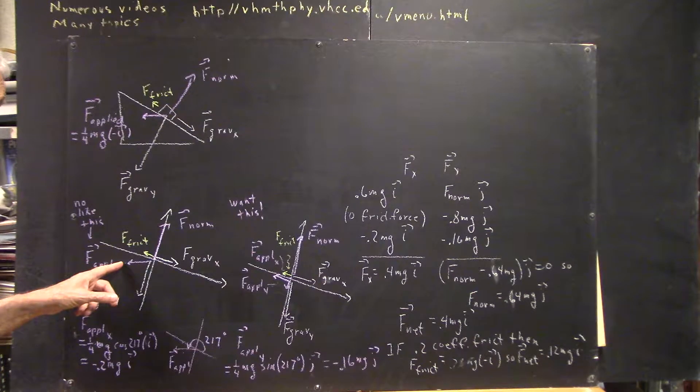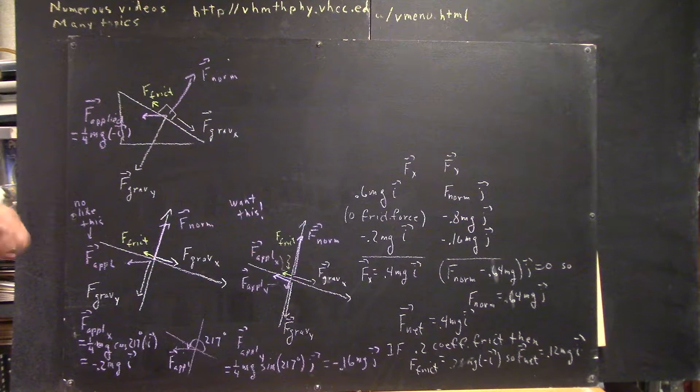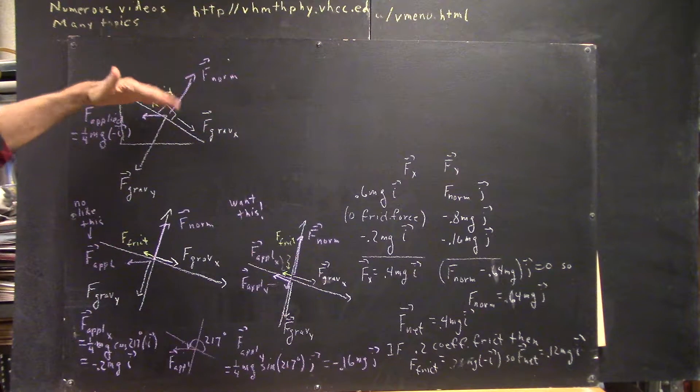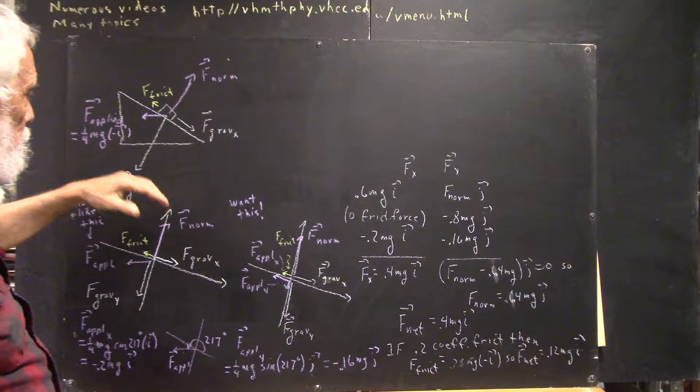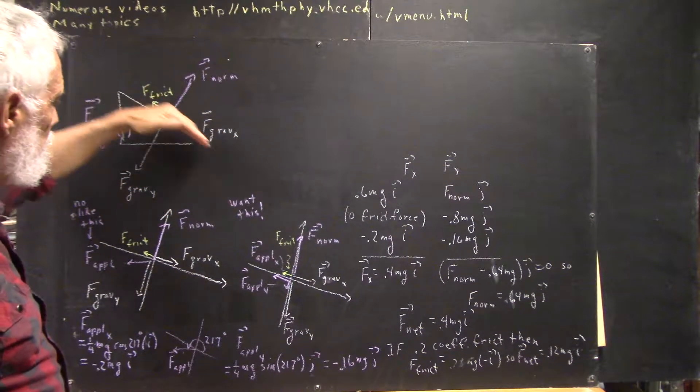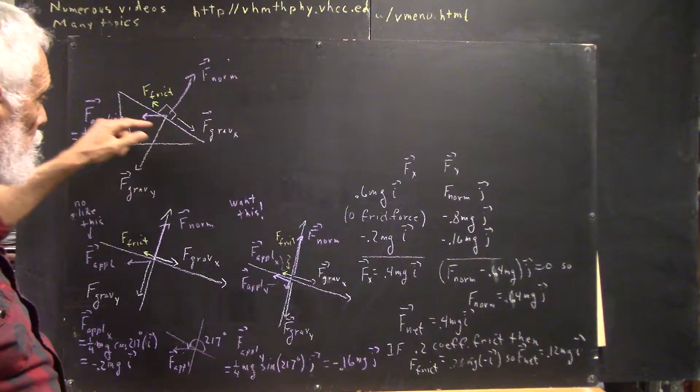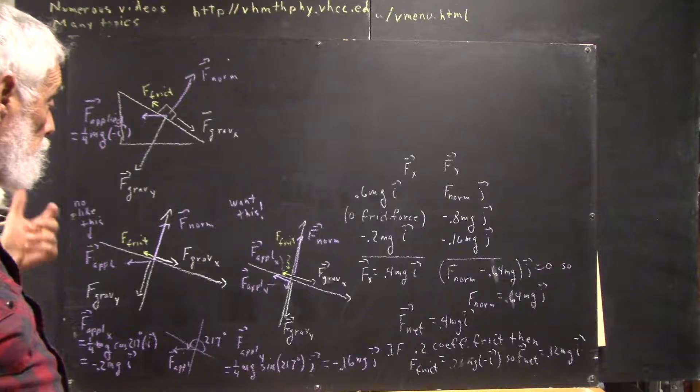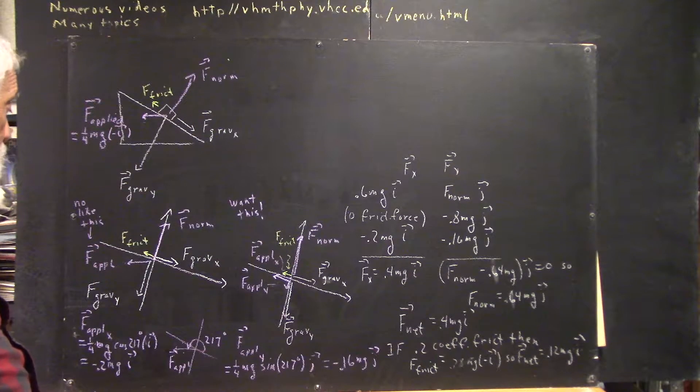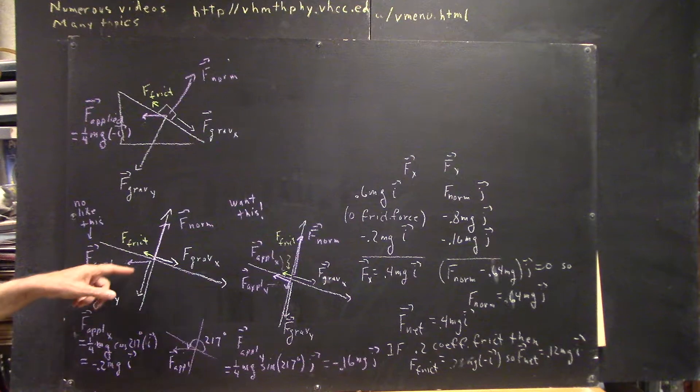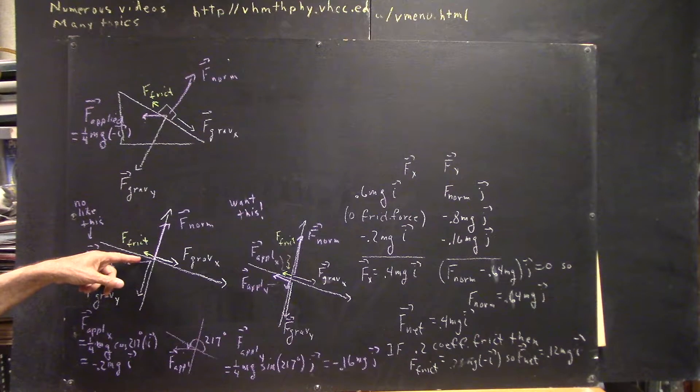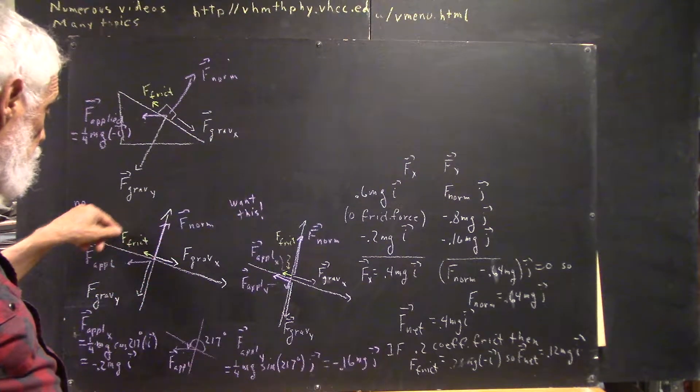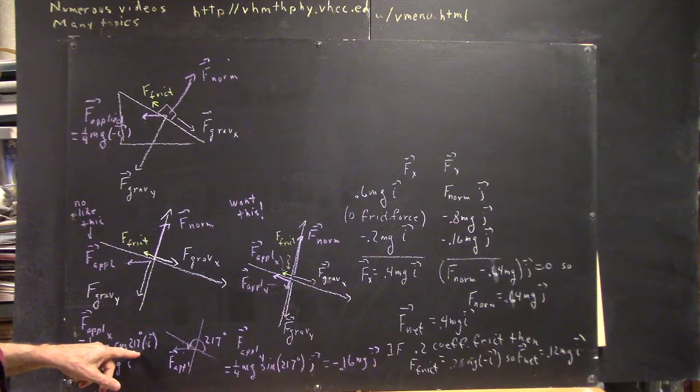So we're going to want to do that with the applied force. Now we know that when this thing rotates down, we know that 37 degrees is the angle between the incline and horizontal, so a horizontal force is going to have to be at 37 degrees relative to the direction of the incline. So that means this angle here is going to be 37 degrees, so that this angle here is 217 degrees.